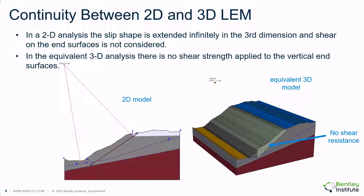It is possible to set up a three-dimensional model which exactly replicates the behavior of a two-dimensional model, as demonstrated in these figures. The left-hand model shows the 2D model setup and the equivalent 3D model is shown to the right. In the right figure, there is no shear resistance applied to the end faces of the sliding mass, and therefore the factor of safety should be the same as the 2D configuration, which it is. The fact that shear resistance is not applied to the vertical faces at each end of the slide is a reason that the 2D factor of safety is typically lower than the 3D factor of safety.